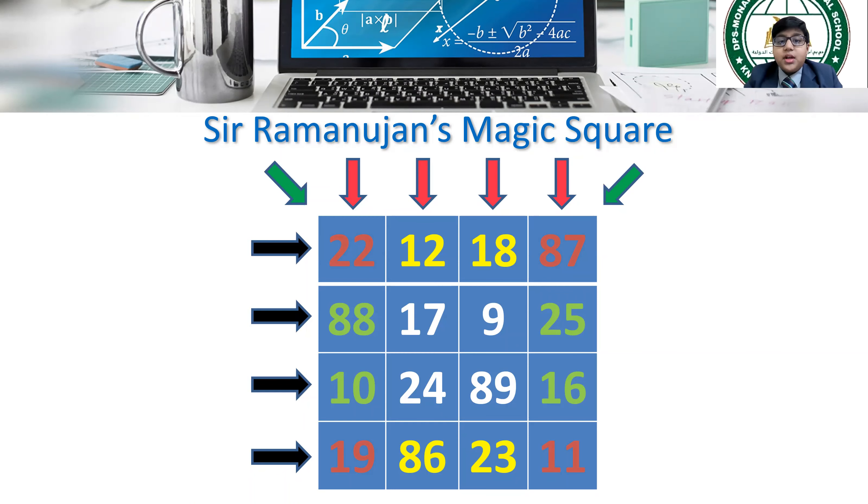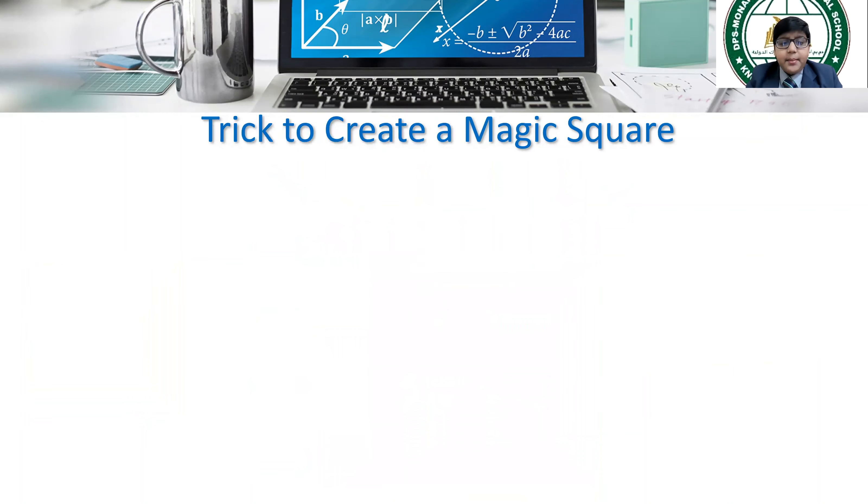Now, if you observe the first row that forms Sir Ramanujan's date of birth, yes, it is 22nd December 1887. Isn't it amazing?